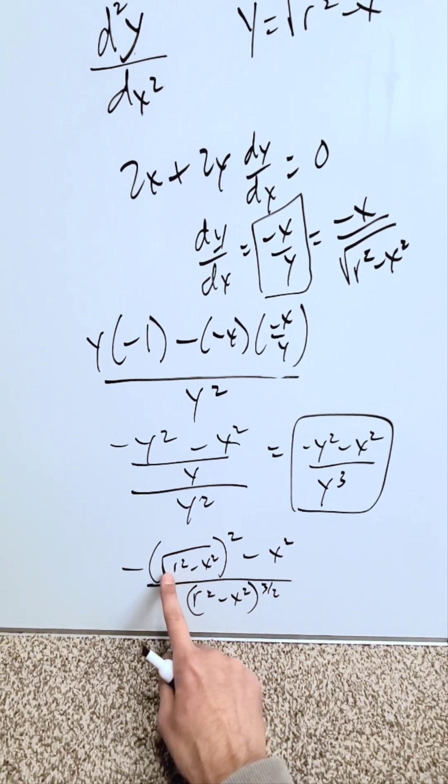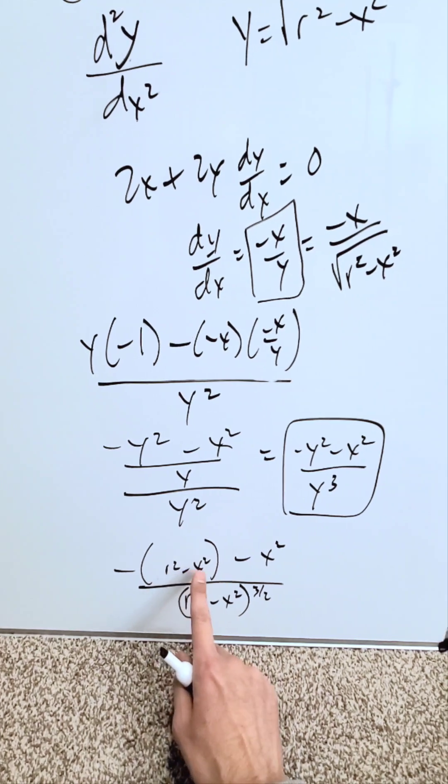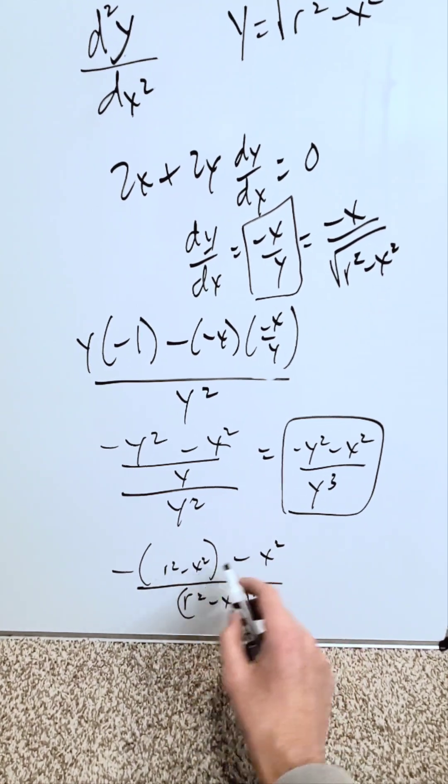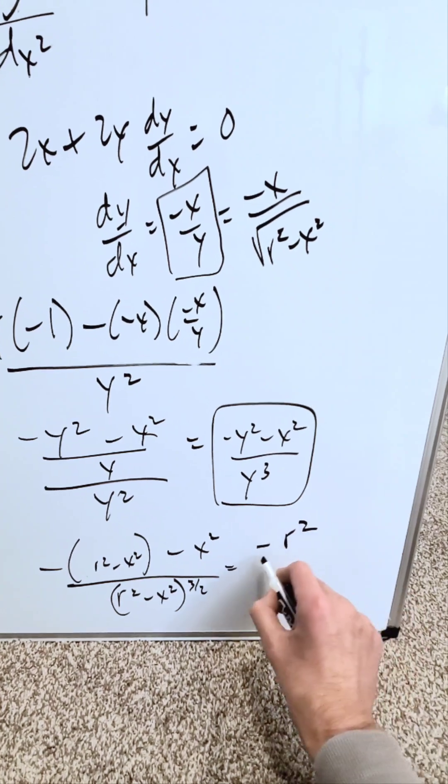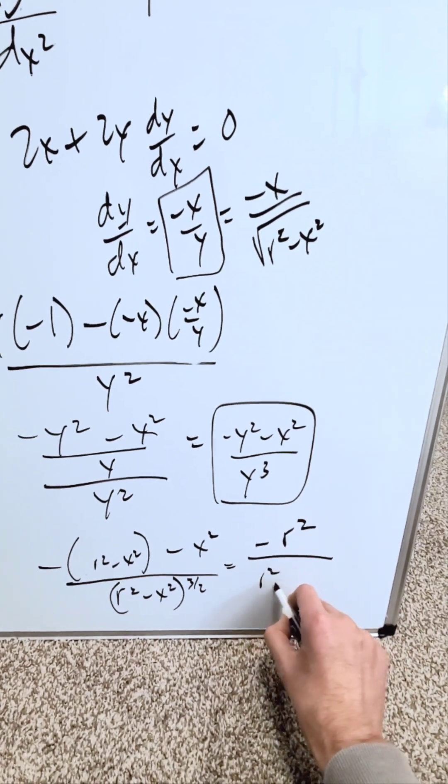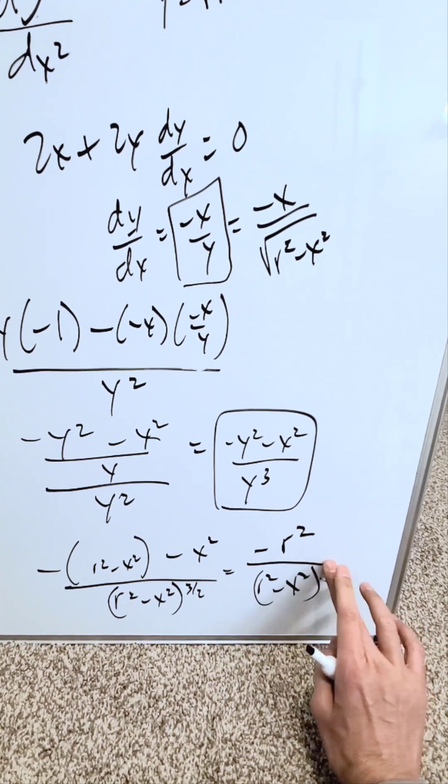When you clean this out, what happens? The square root cancels out with this exponent. You'll have minus r squared plus x squared. The x squared items will cancel out. What will remain is your second order derivative: minus r squared over r squared minus x squared, all to the power of 3 over 2.